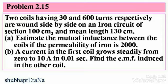Problem 2.15. Two coils having 30 and 600 turns respectively are wound side by side on an iron circuit of cross-section 100 cm² and mean length 150 cm. Estimate the mutual inductance between the coils if the permeability of iron is 2000. Part B: a current in the first coil grows steadily from 0 to 10 Amperes in 0.01 seconds — find the EMF induced in the other coil.